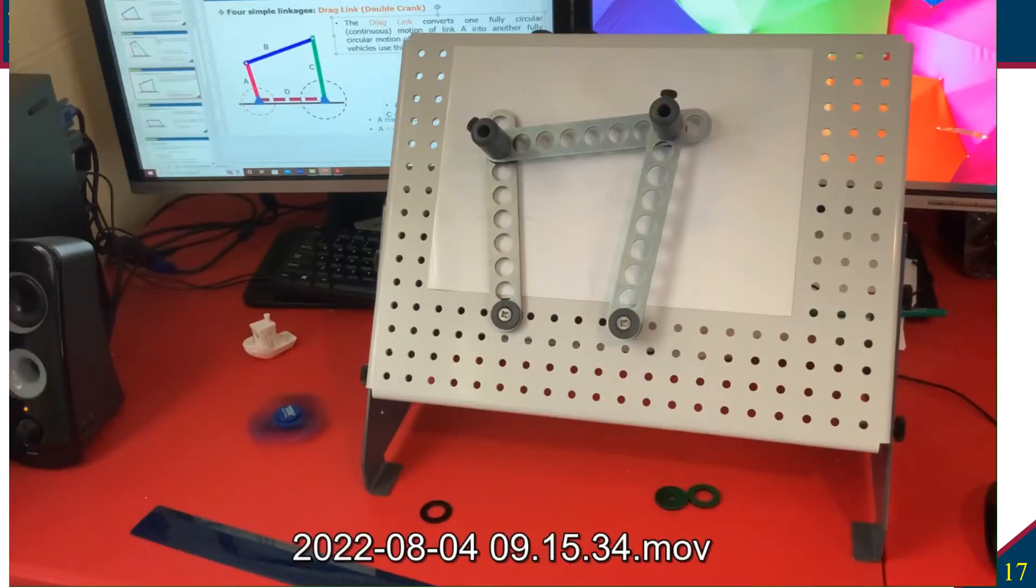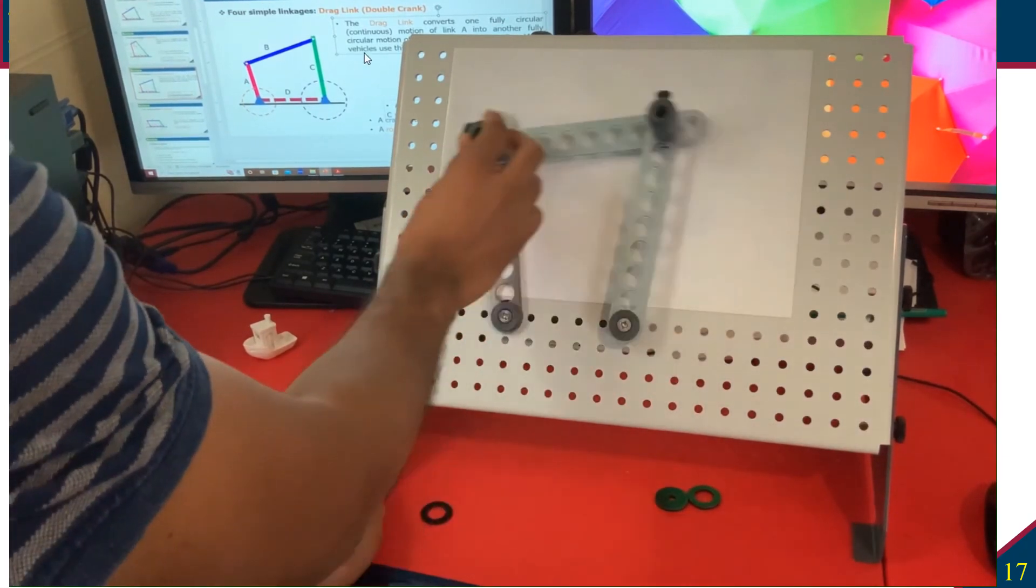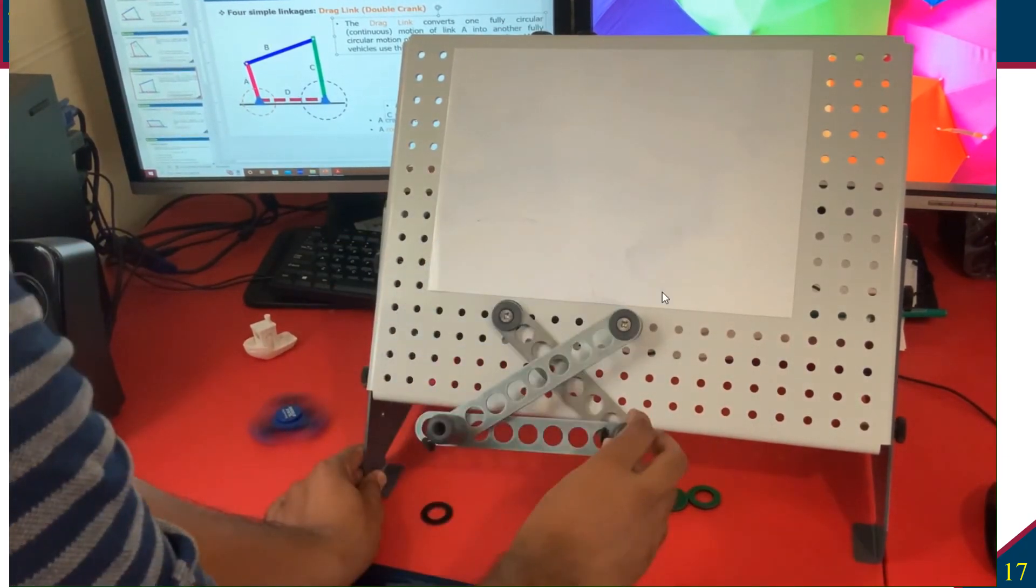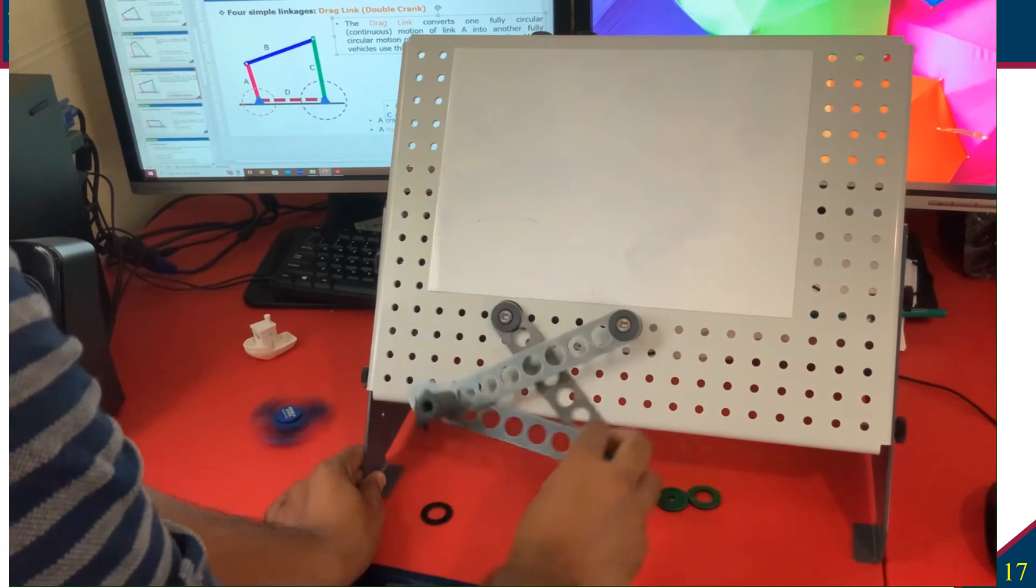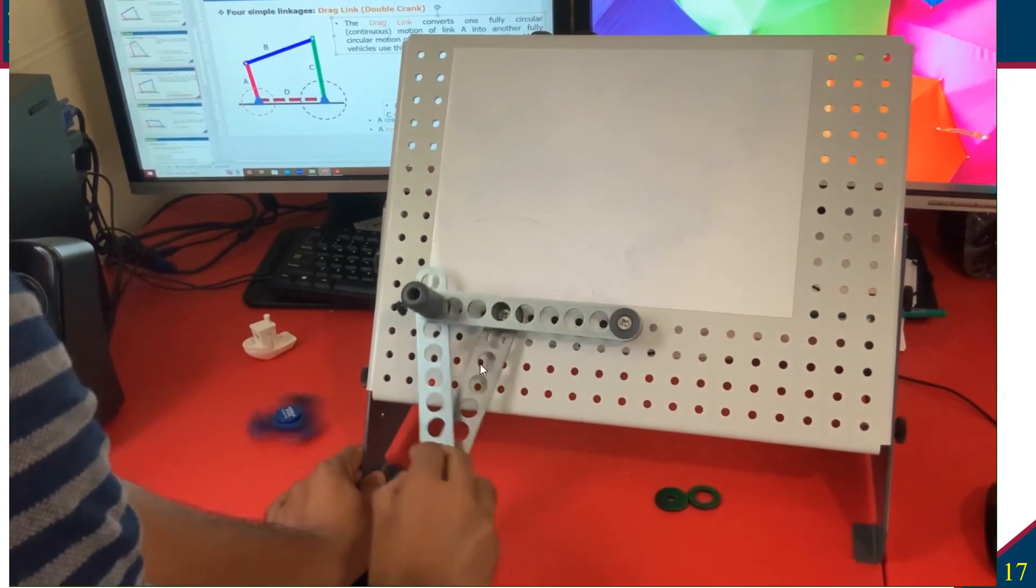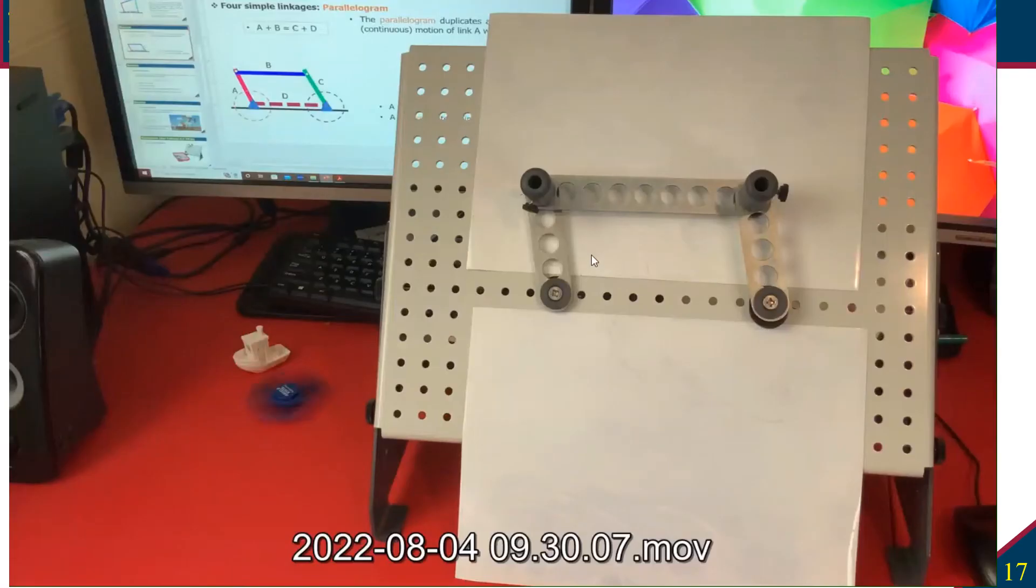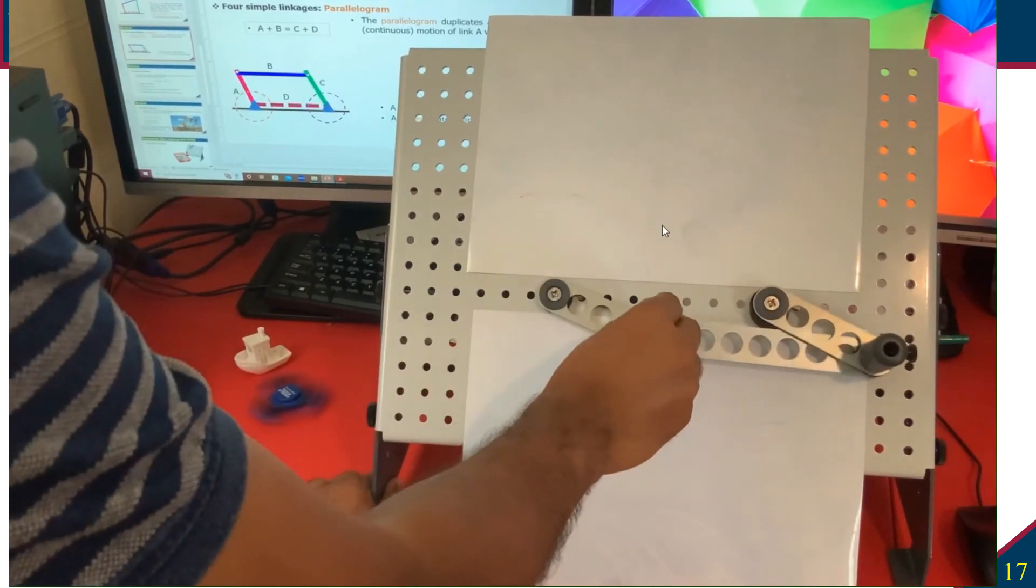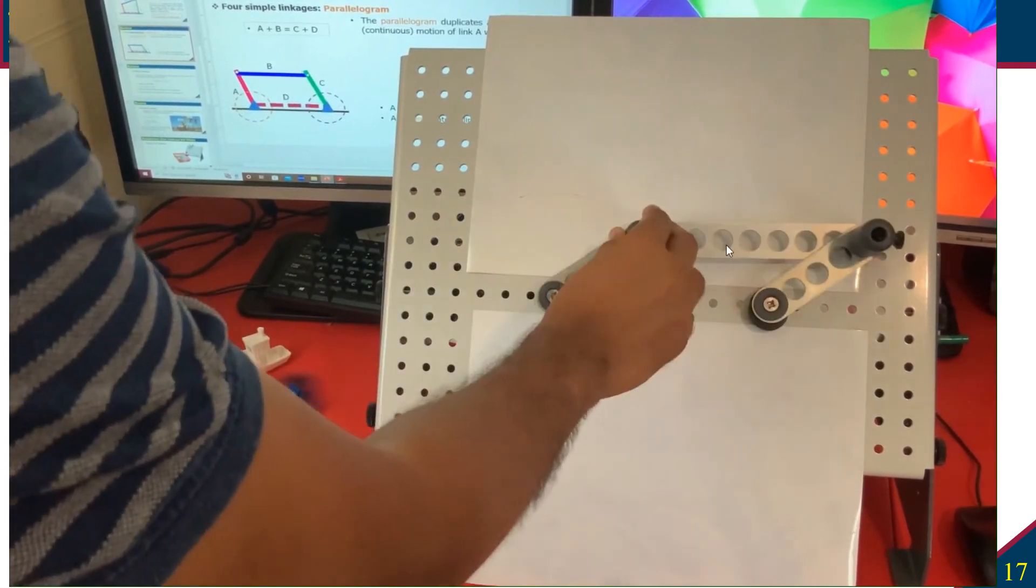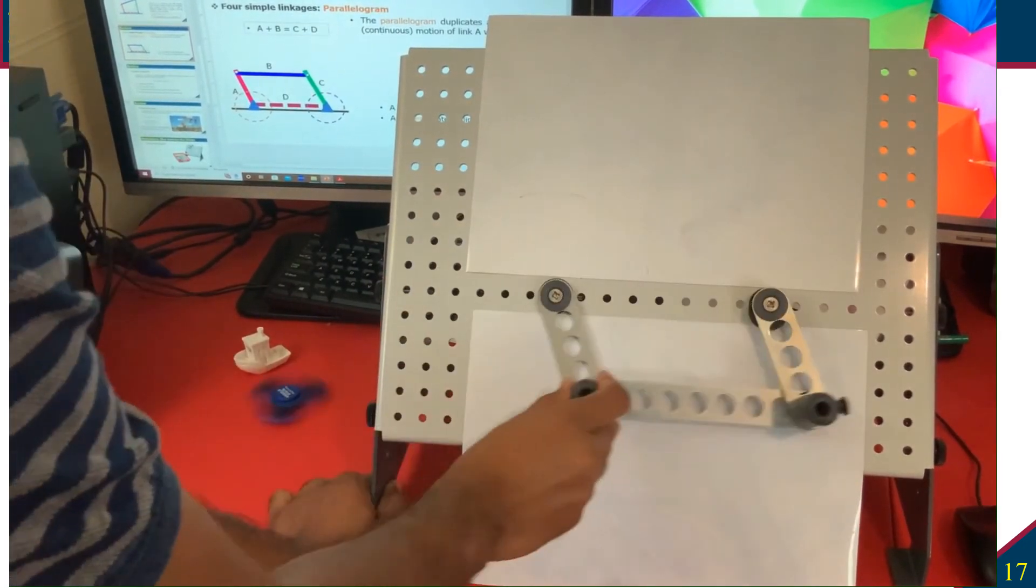Now we move to our third setup, which is the drag link. You see one full circle will have continuous full circle for the other one. It is having all 360 degree rotation from here to here. You also have to measure the length. This is our final one where you have the parallelogram where they just follow the parallel motion.